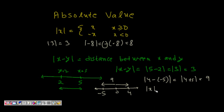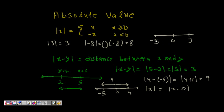Now, what does |x| mean on its own? It means the distance between x and 0 — the distance from the origin. Distance is always non-negative, so we don't say it's negative or positive — it's just an absolute value. The distance of +3 from 0 is the same as the distance of -3 from 0, and that's why |3| and |-3| are both equal to 3.